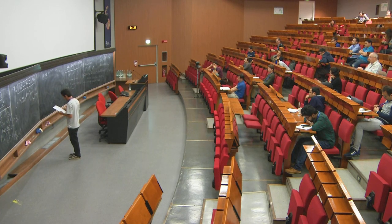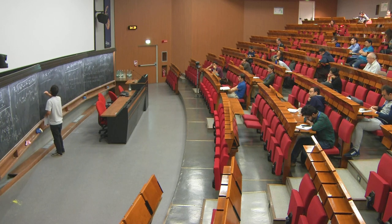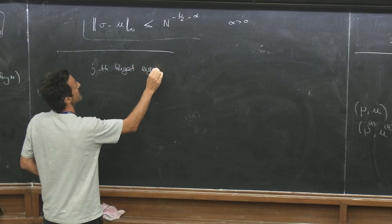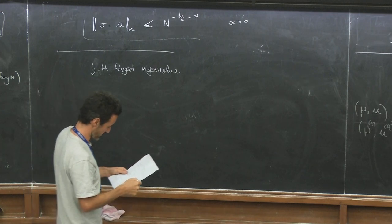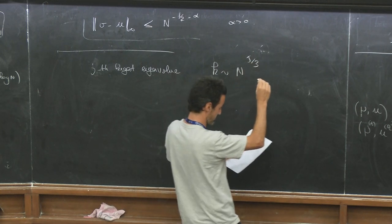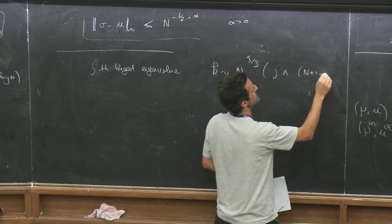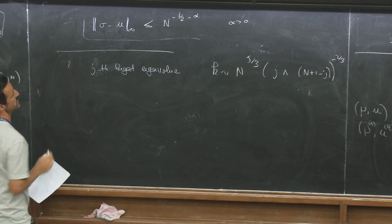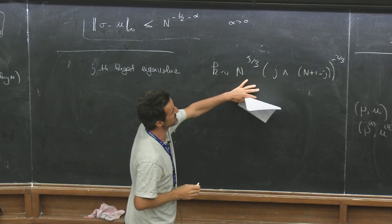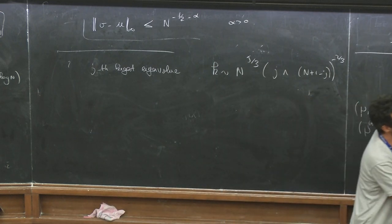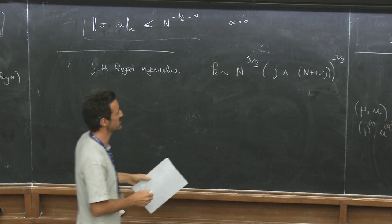This can probably be generalized to the k-th or j-th largest eigenvalue — we didn't try to write the proof, but probably with some minor modifications. Then the threshold would be at k of order n^{5/3} times (min(j, n+1-j))^{-2/3}. This is what gives you the heuristic I gave at the beginning, and I think the proof should work for this case as well.